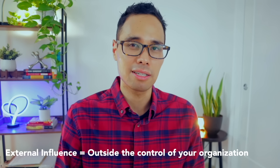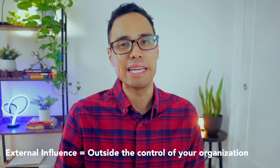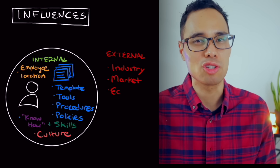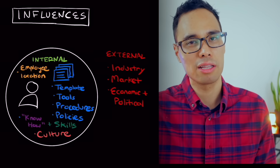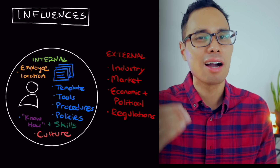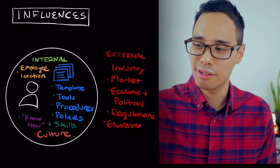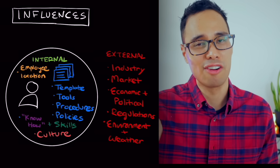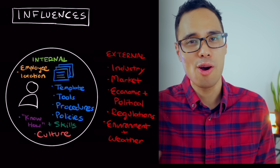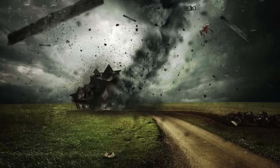For external influences, think of things outside the control of your organization — influences from your industry, the market, economic and political trends, or rules and regulations from the government and controlling agencies. This could also include industry standards, the physical weather and environment itself, such as a hurricane, a flood, or a tornado that might negatively physically impact your ability to do work.